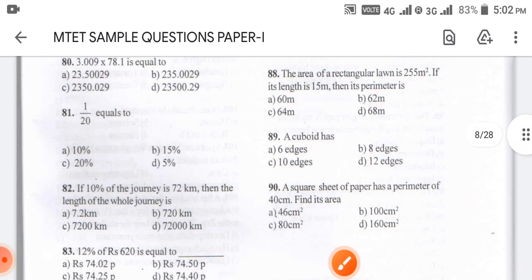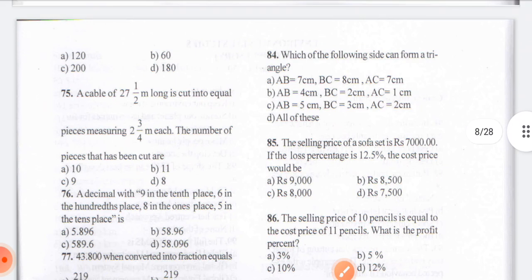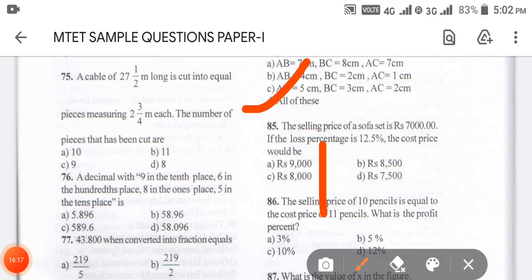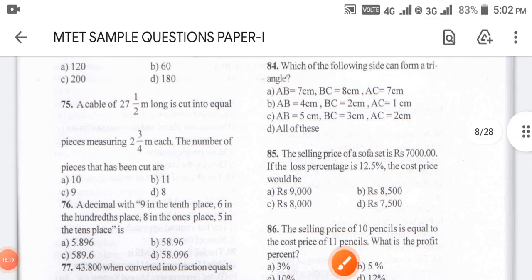Coming to question number 84: which of the following sides can form a triangle? Options are: A — AB=7cm, BC=8cm, AC=7cm; B — AB=4cm, BC=2cm, AC=1cm; C — AB=5cm, BC=3cm, AC=2cm; D — all the above. The answer for 84 is option D — from all of them, triangles can be formed.